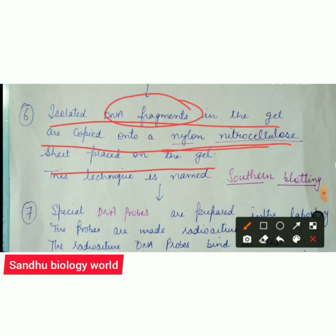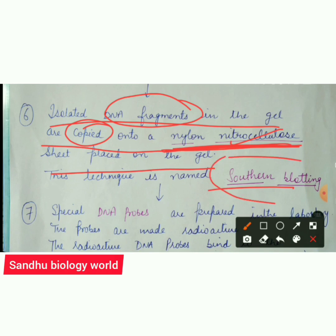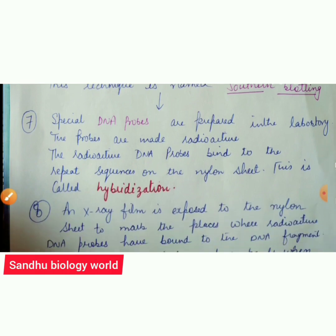The DNA fragments from the gel are transferred onto the nylon nitrocellulose sheet. This technique is called Southern Blotting. You should be able to explain this blotting technique in your answers. Southern blotting is very important — whether for one-mark or two-mark questions.